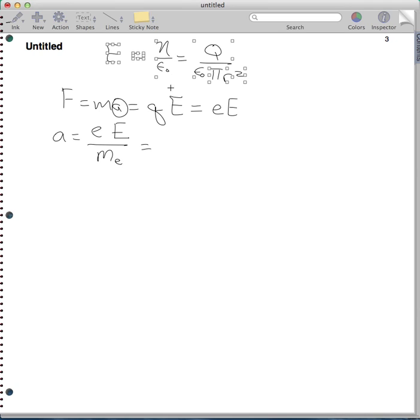So I can rewrite that by plugging this equation in for e. And I have charge on an electron, over the mass of an electron, times q, over epsilon knot, pi r squared.